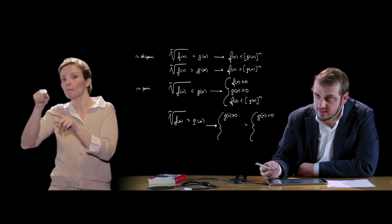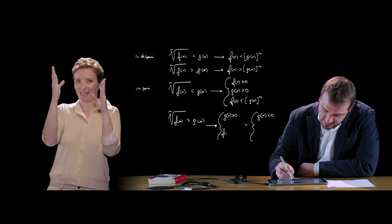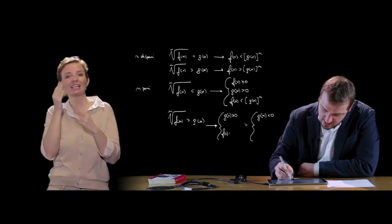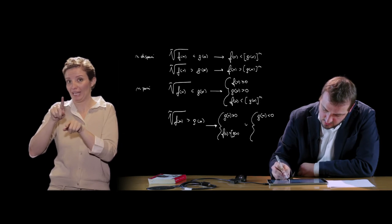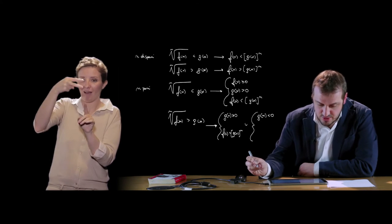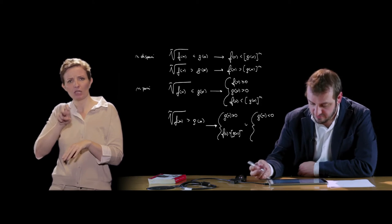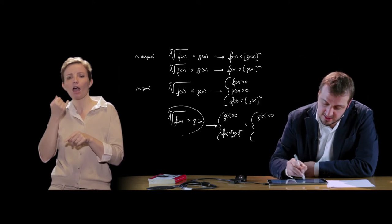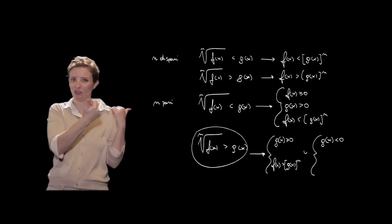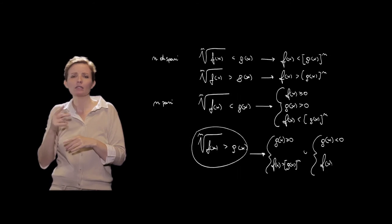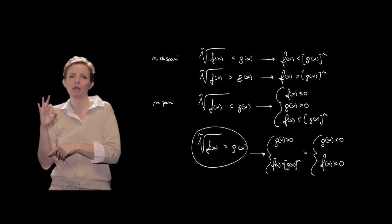Se g(x) è una quantità maggiore o uguale di 0, dovremo andare a vedere quando f(x) è maggiore di g(x) alla n, quindi elevare all'ennesima primo e secondo membro. Se invece g(x) è minore di 0, affinché la nostra disequazione sia verificata, è sufficiente che essa esista, ossia è sufficiente che f(x) sia maggiore o uguale a 0.